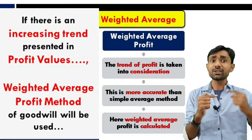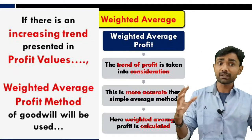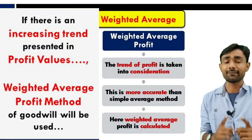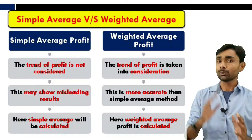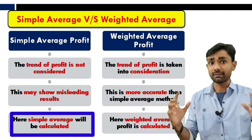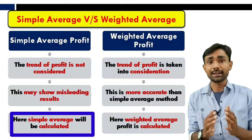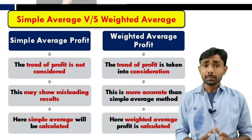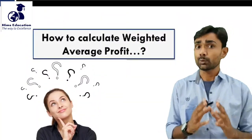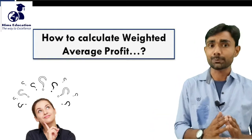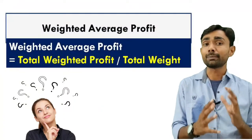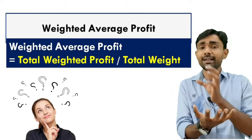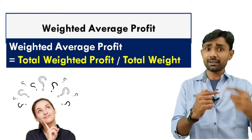So, when the profit of each year is increasing — when your profit of every year shows an increasing trend or decreasing trend — at that time, weighted average profit method is used. Just as we calculated simple average profit in the simple average profit method, in the same manner, to use the weighted average profit method, we need to calculate the weighted average profit. The formula is: Weighted Average Profit equals Total Weighted Profit divided by Total Weight.